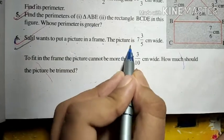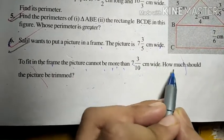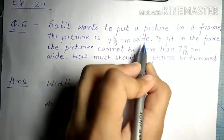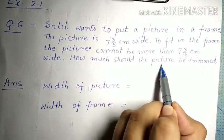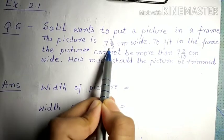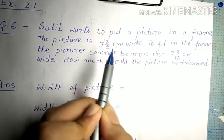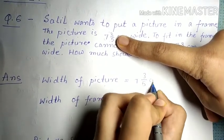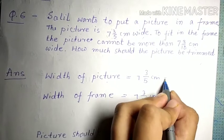Exercise 2.1, question number 6: Sahil wants to put a picture in a frame. The picture is 7⅗ centimeters wide. To fit in the frame, the picture cannot be more than 7 3/10 centimeters wide. How much should the picture be trimmed? The picture's width is greater than the frame's width, so we will subtract the frame width from the picture width.